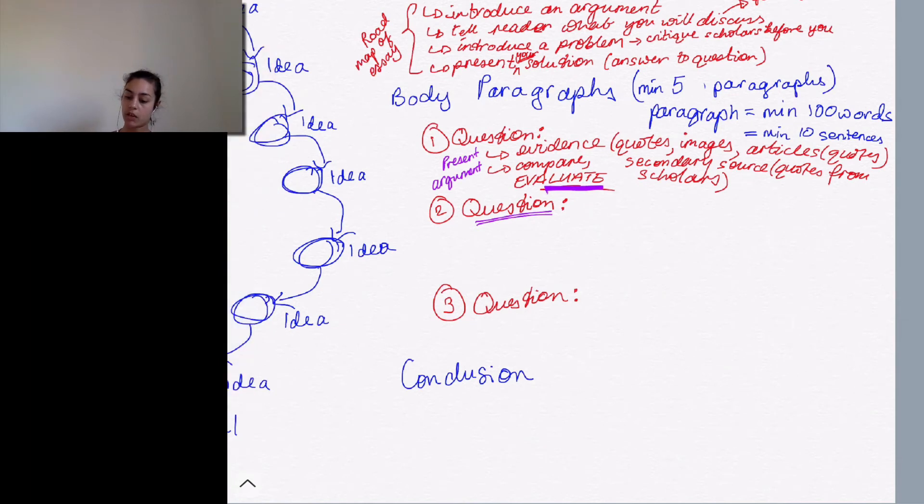So I'll give you some numbers as well to aim for. So for each question, each paragraph, three pieces of evidence. That's kind of the aim. You can include more if you want to, just make sure it's relevant.